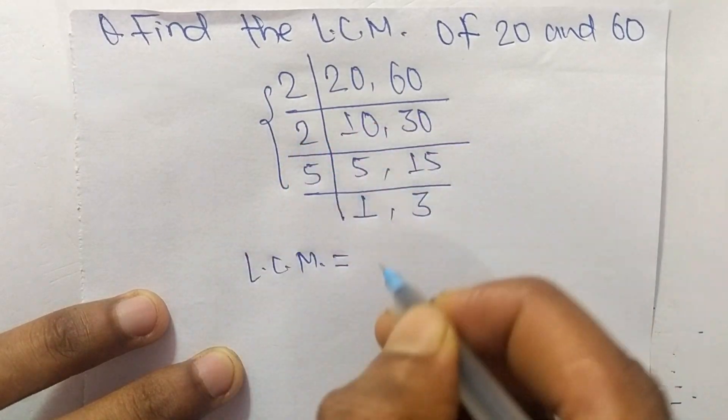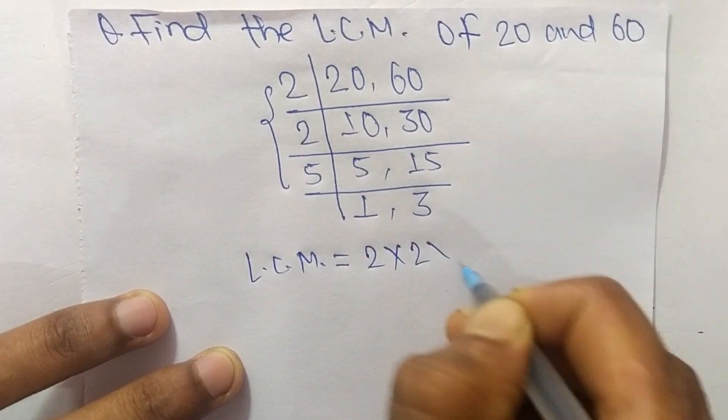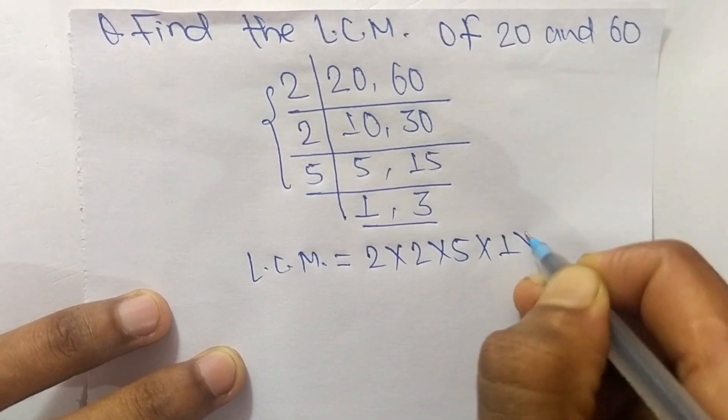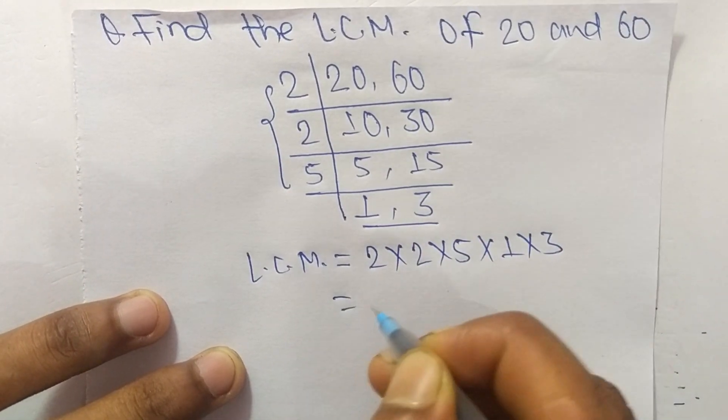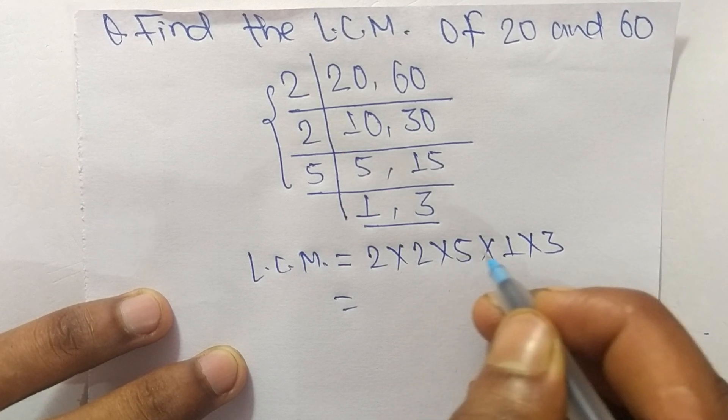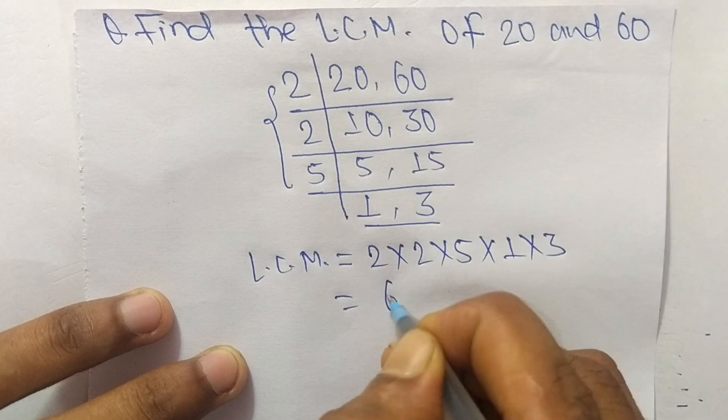...from this part it is 2 times 2 times 5, and from this part it is 1 times 3. 2 times 2 equals 4, 4 times 5 equals 20, times 1 is 20, times 3 equals 60.